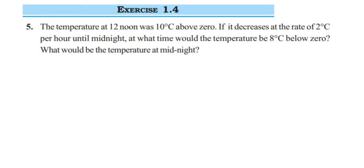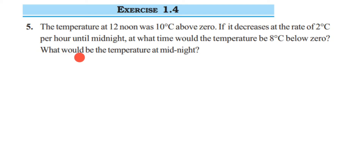Here's a question from Exercise 1.4, fifth question — the Integers chapter of Class 7. The question is: the temperature at 12 noon was 10 degrees Celsius above zero. If it decreases at the rate of 2 degrees Celsius per hour until midnight, at what time would the temperature be 8 degrees Celsius below zero? They're asking two questions: what will the temperature be at midnight, and at what time will the temperature be 8 degrees Celsius below zero — which means minus 8 degrees Celsius.